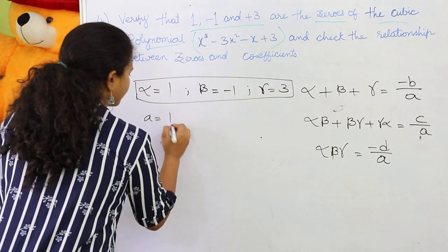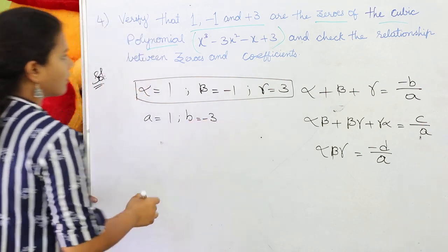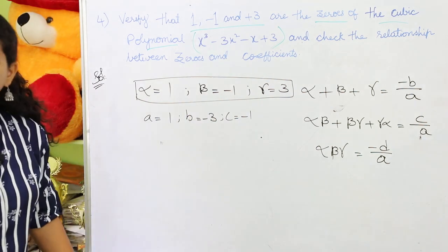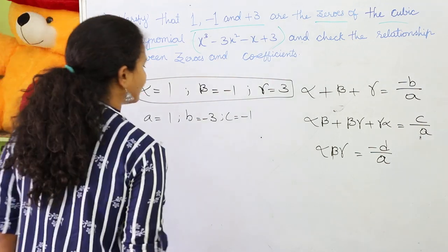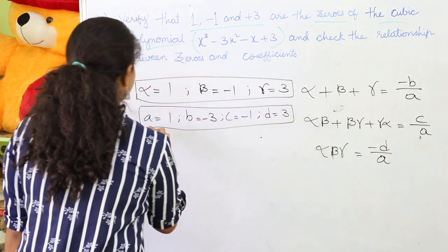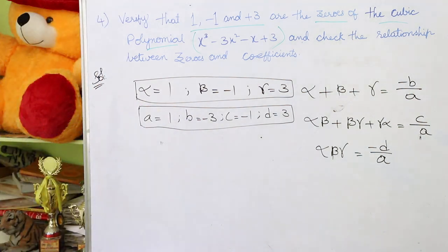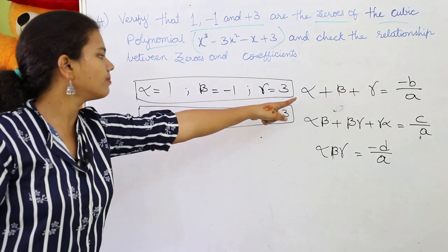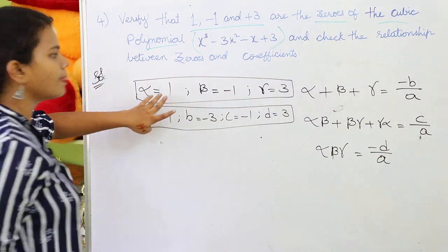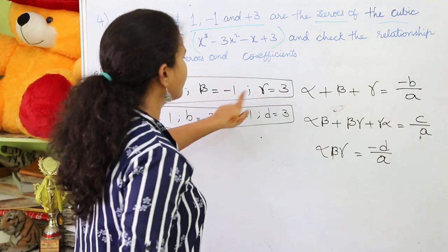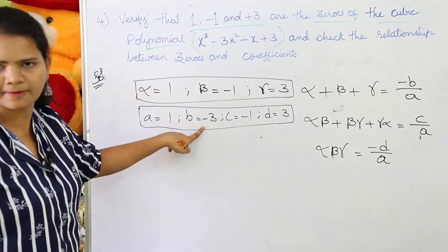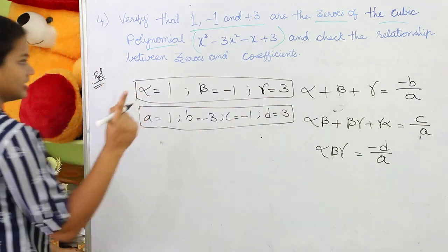Now let's verify the first relation: alpha + beta + gamma = -B/A. Substituting values: 1 + (-1) + 3 on the left side, and -(-3)/1 = 3 on the right side. The +1 and -1 cancel, giving 3 = 3. Since the denominator A = 1, we only consider the numerator. Both sides equal 3.